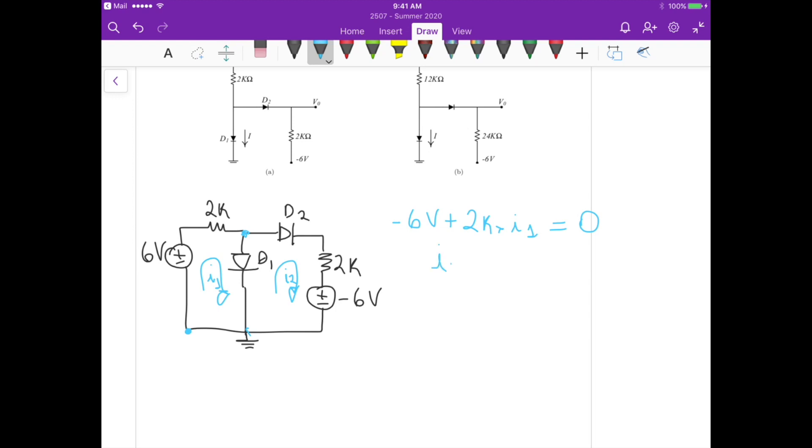So if we calculate I1, we get that it's 6 divided by 2K, and that's equals to 3 milliampere. So it's a positive value. So it agrees with the direction that we assume.